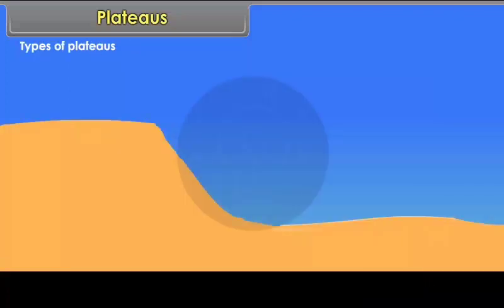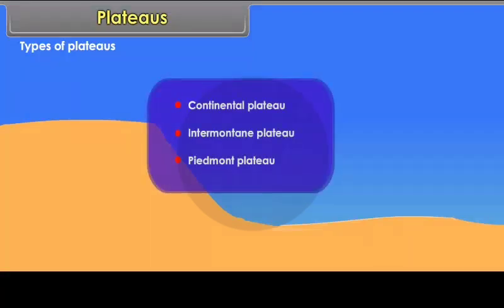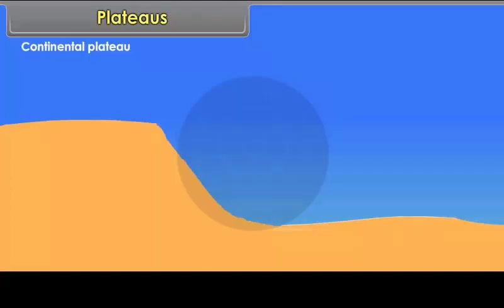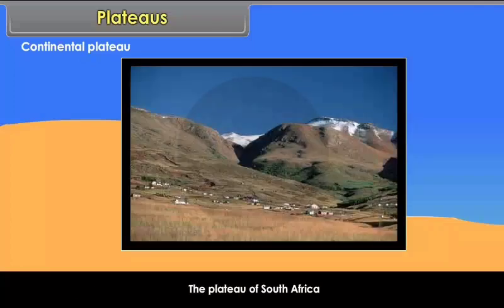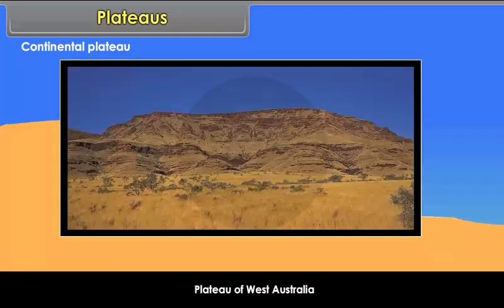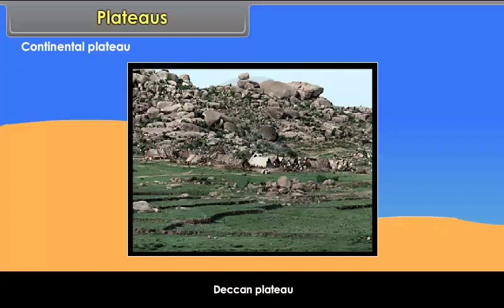Types of Plateaus. On the basis of their geographical location and structure, plateaus are of different types: Continental Plateaus, Intermontane Plateaus, and Piedmont Plateaus. Continental Plateaus rise abruptly from the adjoining sea or lowlands. Examples include the Plateau of South Africa, the Plateau of West Australia, the Chota Nagpur Plateau, and the Deccan Plateau.